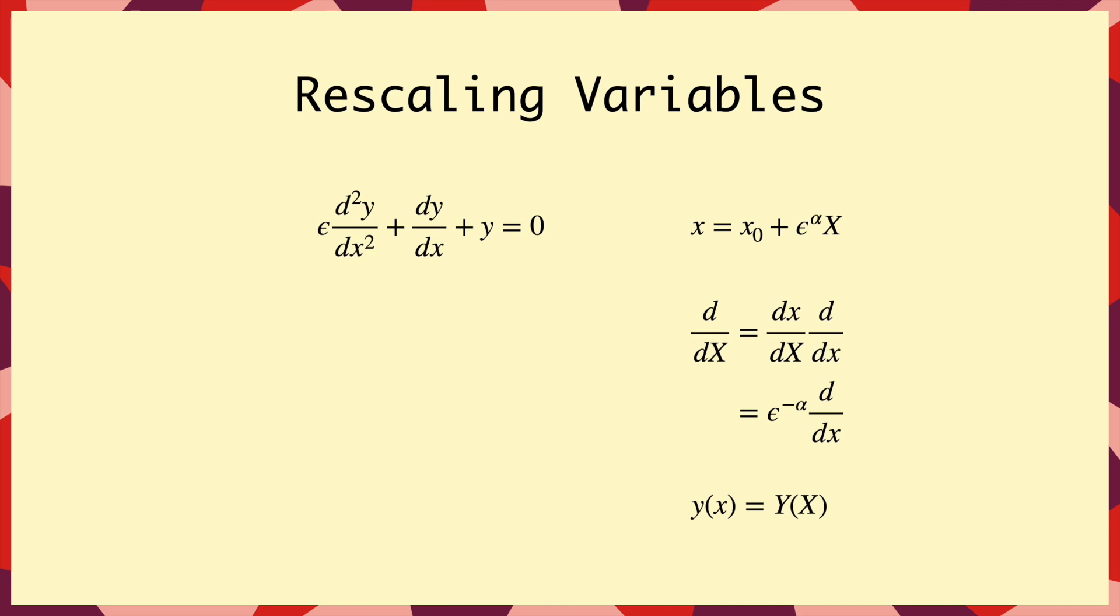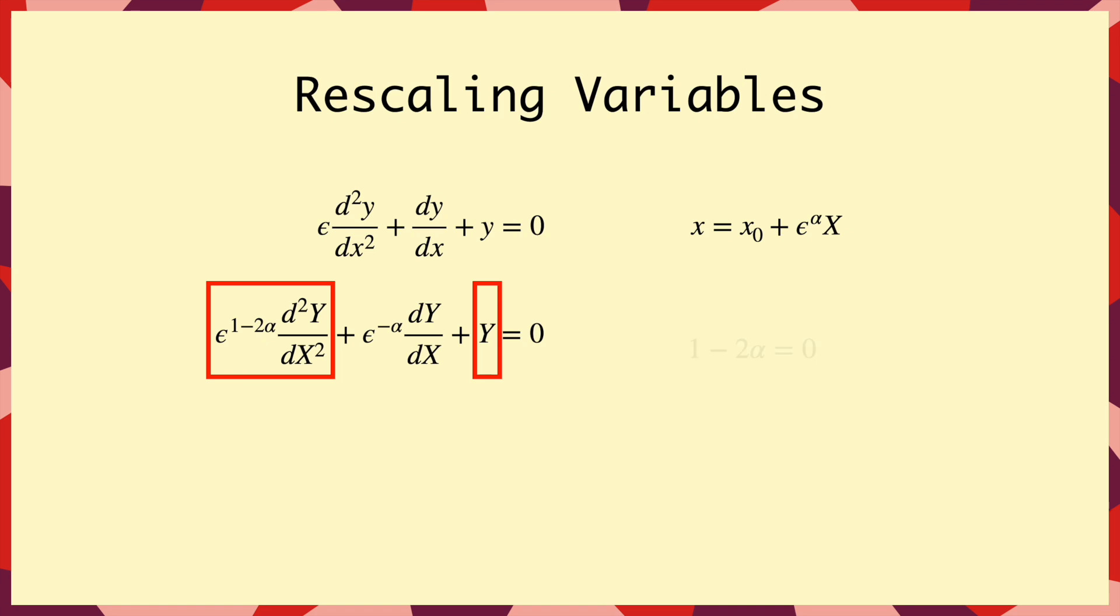So when we substitute our new variables into the equation, we get these ε^(-α) terms appearing. And what we want to do now is try to find what's called a dominant balance between two terms. So we need to choose alpha such that there are two terms which are the same size, or balanced, and the remaining term is smaller than those two, hence the dominant part. Now we know that the first term must be one of the two in our dominant balance, since we ignored it in the outer solution. So let's try balancing the first and last terms. And for that to work, they need to have the same power of epsilon, which means that 1 - 2α = 0. So alpha is a half.